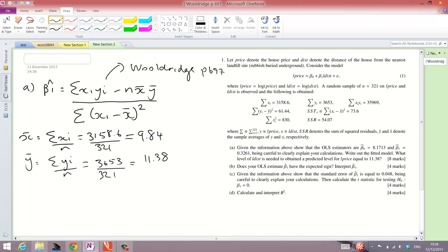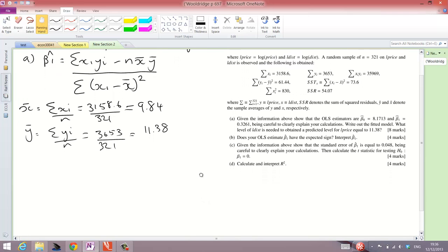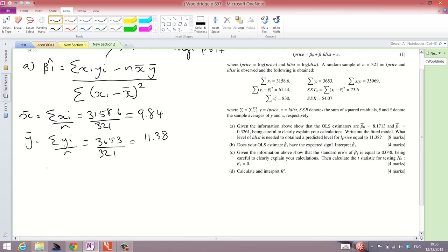So, we just plug them in. Beta 1 hat equals sum of x i y, which is given in the question to be 35969 minus N, 321, times those means that we've just calculated here, all over the total sum of squares for x, which is this here. And the answer we get is 0.3261, which is required in the question.